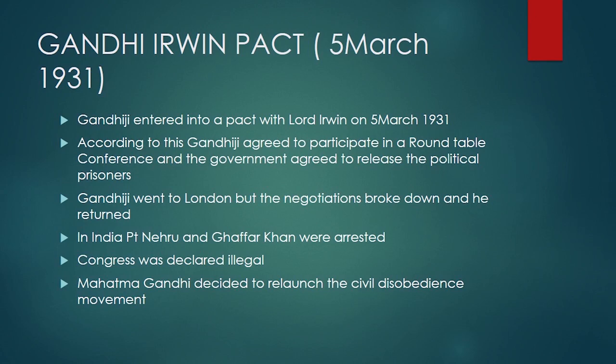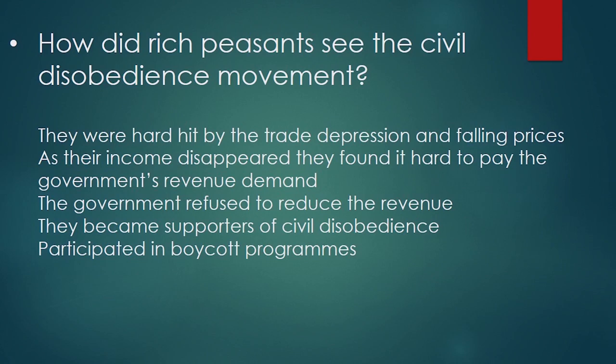Mahatma Gandhi thought again that they would have to launch the Civil Disobedience Movement once more. When the Civil Disobedience Movement was launched again, all social groups responded differently. How did rich peasants see the Civil Disobedience Movement? They were hard hit by the trade depression and falling prices, and as their income disappeared, they found it hard to pay the government's revenue demand. So they became supporters of civil disobedience and participated in boycott programs.